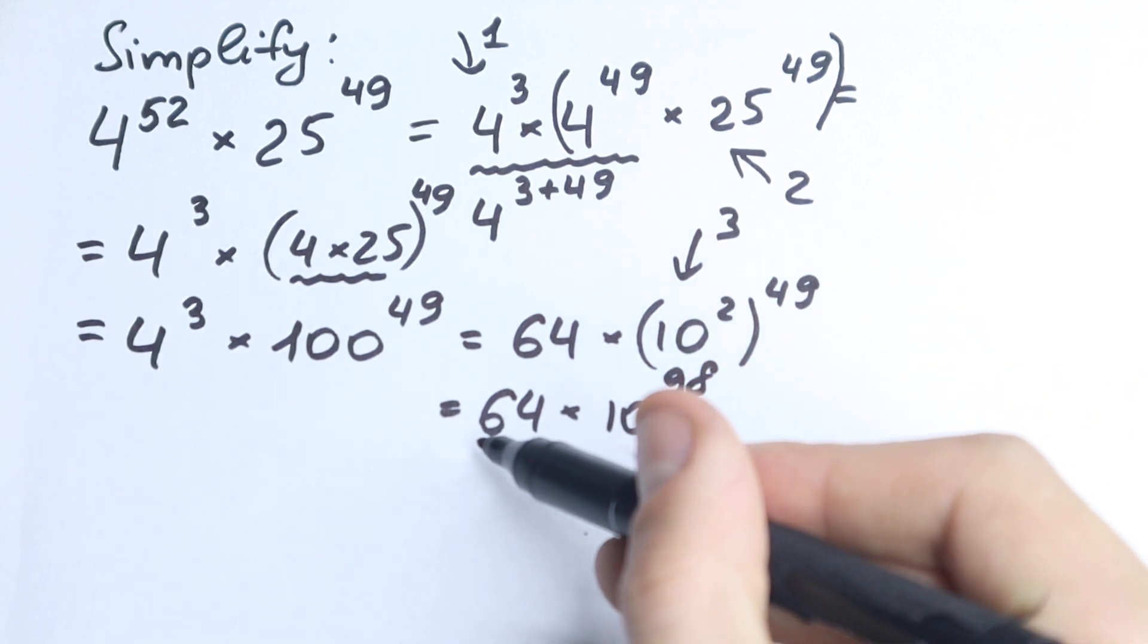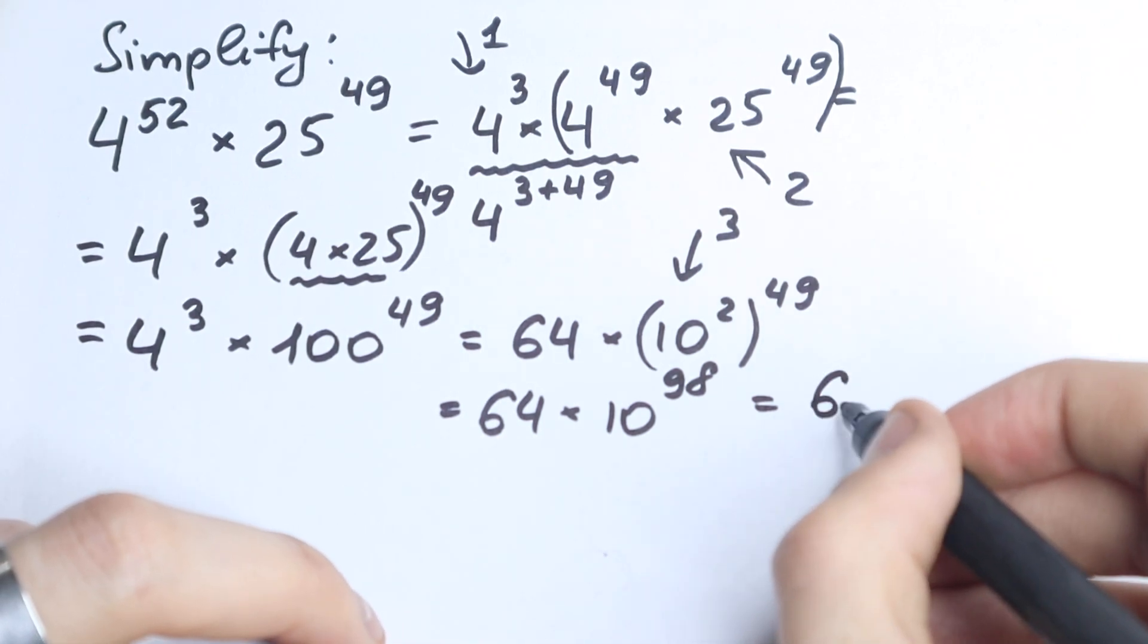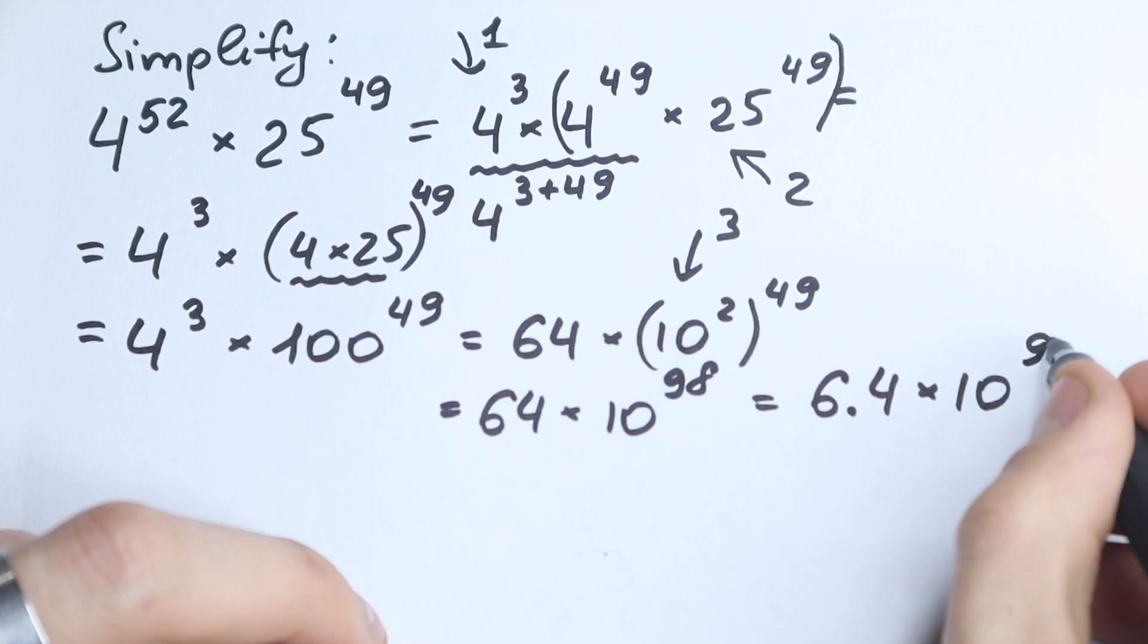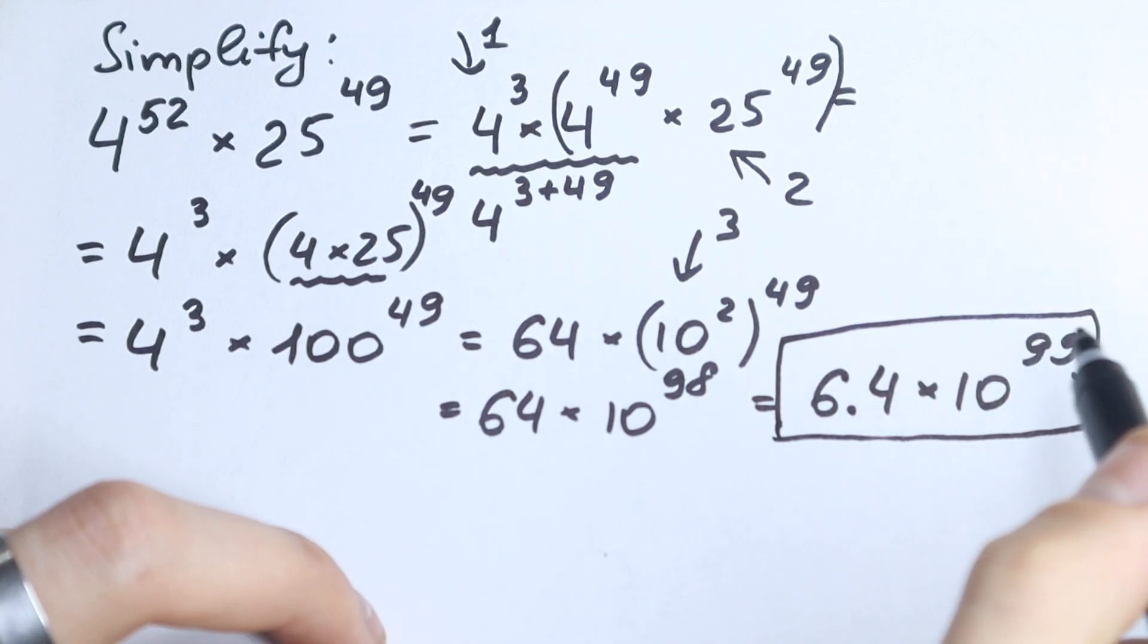We have 64. I'll write it in another way. Let's move this dot right here on the left-hand side, so we have 6.4 times 10 to the power 99. So as you can see, without any calculation, without our telephone, we find this answer and it's really great.